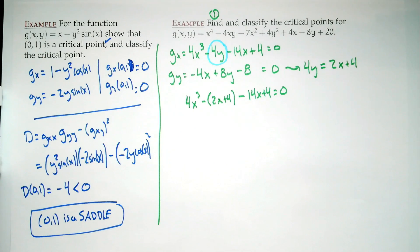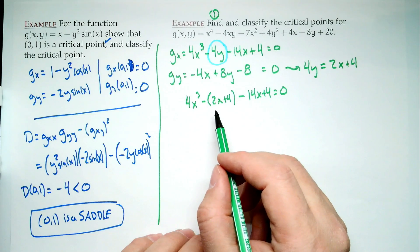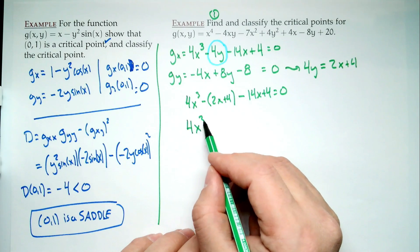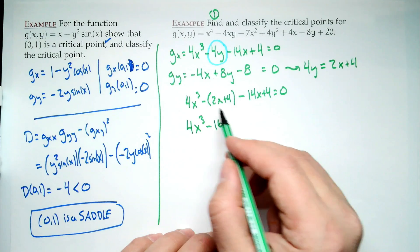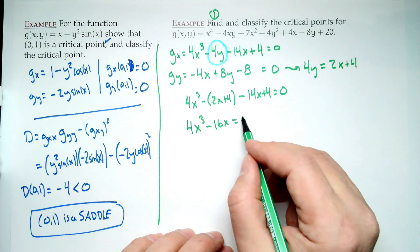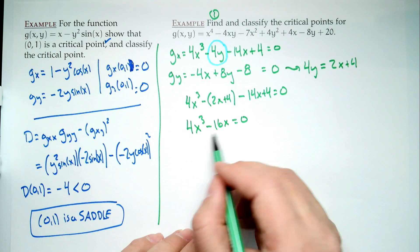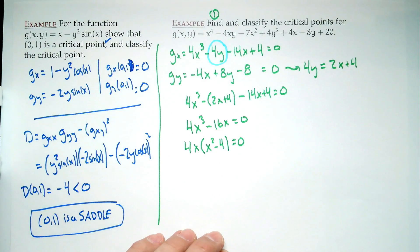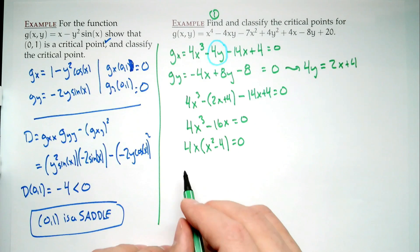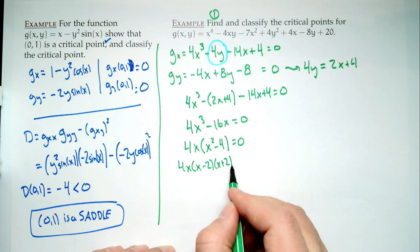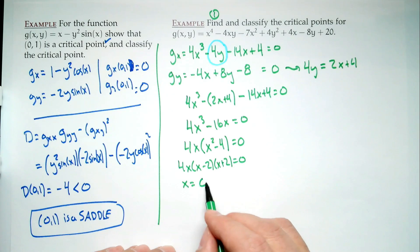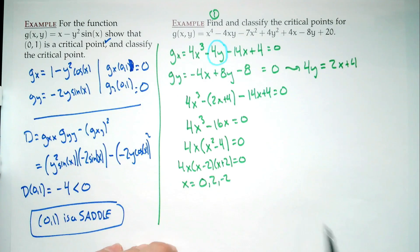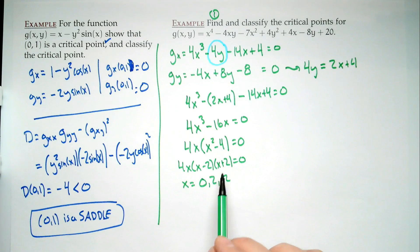Factoring 4x³ - 16x = 0: factor out 4x to get 4x(x² - 4) = 0, then further: 4x(x-2)(x+2) = 0. So x = 0, x = 2, or x = -2. These are x-values, not points yet — we need y values too.